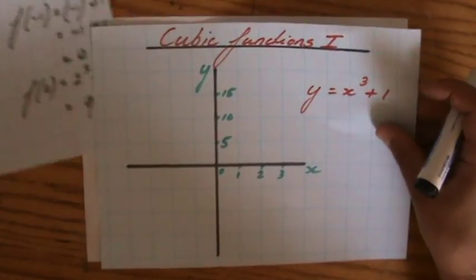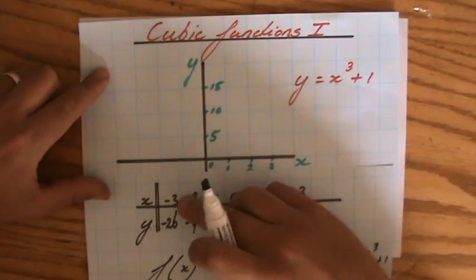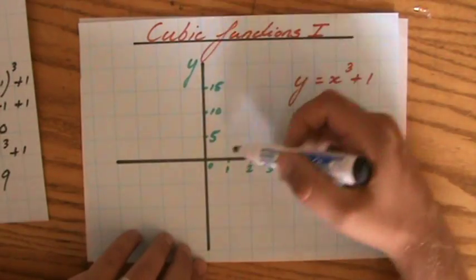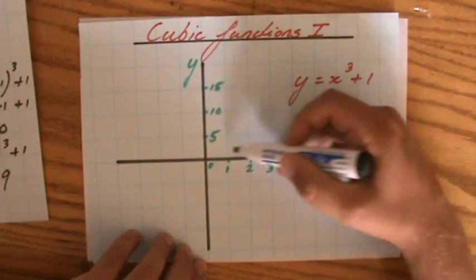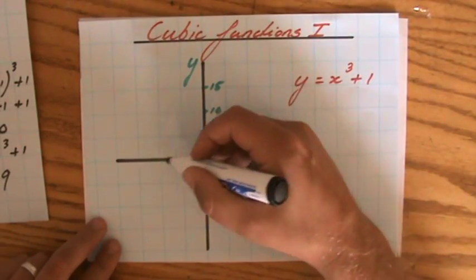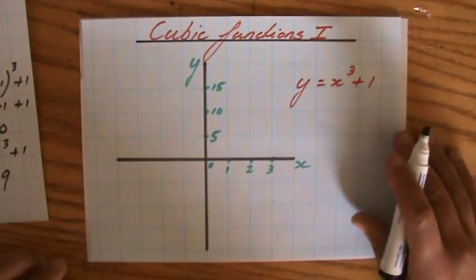So the first point, minus 3, minus 26. As you can see, I have a particular scale. 1 on the horizontal X for 1 block and 5 vertically. Minus 26, 1, 2, 3, minus 5, 10, 15, 20. So that's not even going to fit.